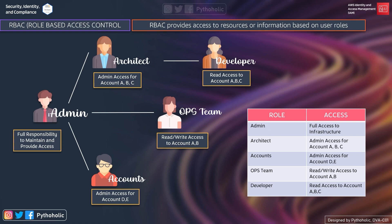The traditional authorization model used in IAM is also role-based access control, where RBAC defines permissions based on the person's job function, known outside of AWS as a role. Within AWS, a role usually refers to an IAM role, which is an identity in IAM that you can assume.